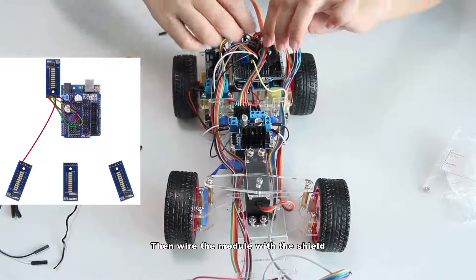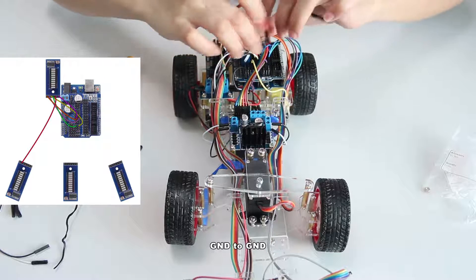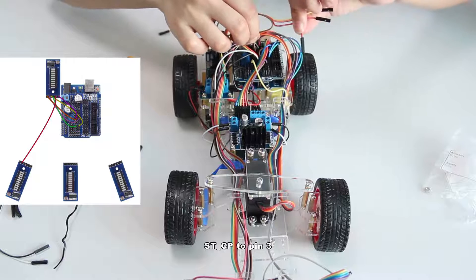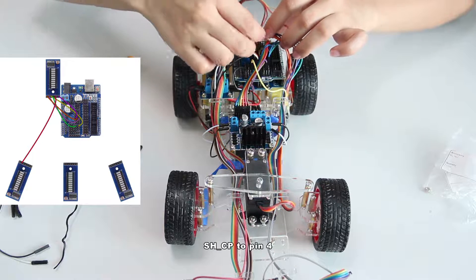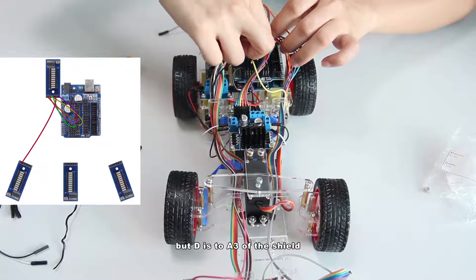Then wire the module with the shield, VCC to 5V, GND to GND, STCP to pin 3, SHCP to pin 4, but D is to A3 of the shield.